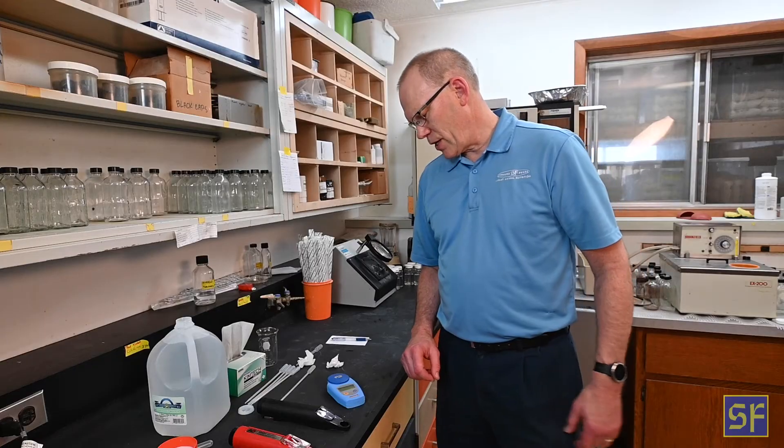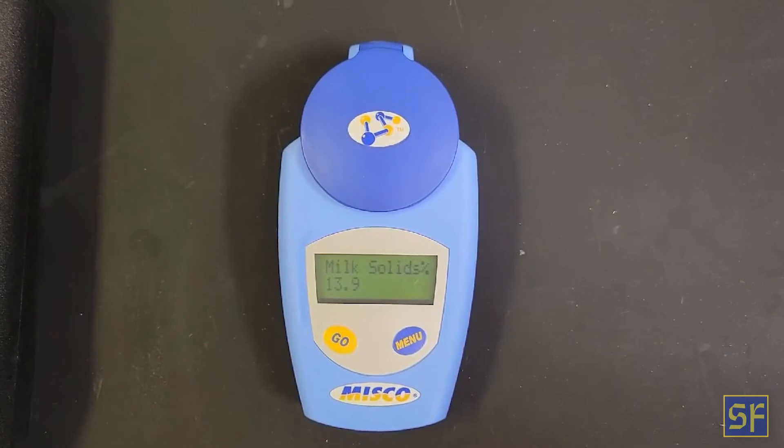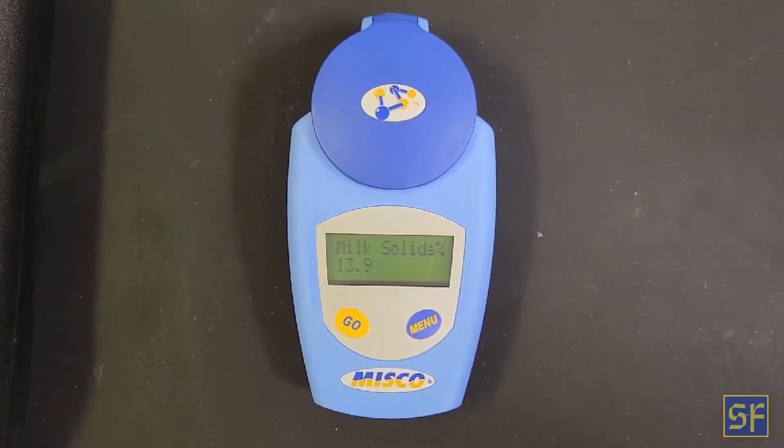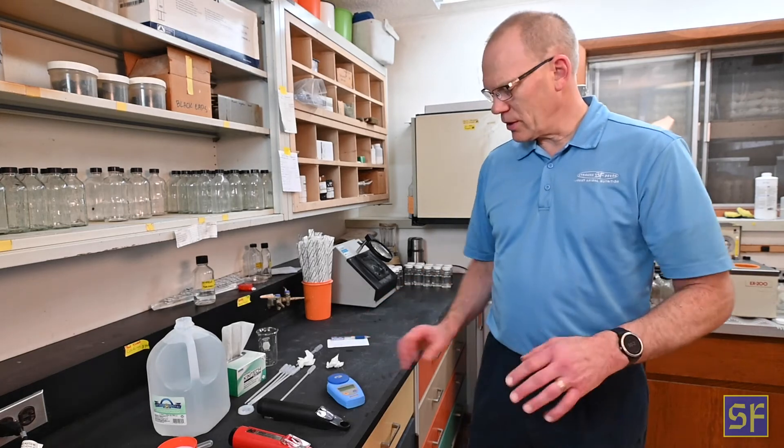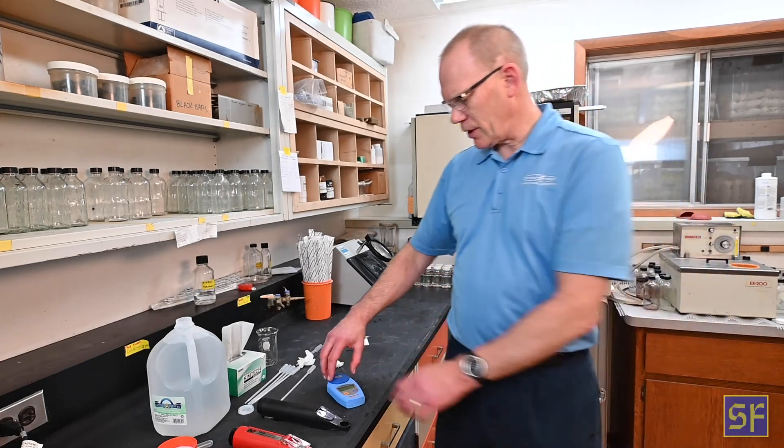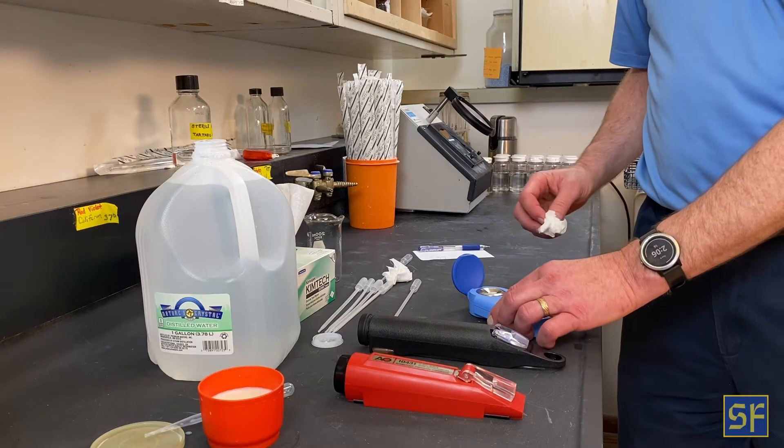And I'm going to do a third reading here. And my third reading is 13.9. So very consistent on this unit in terms of the unit's ability to reproduce the numbers and get very similar results. So this is using the digital unit. We're done.